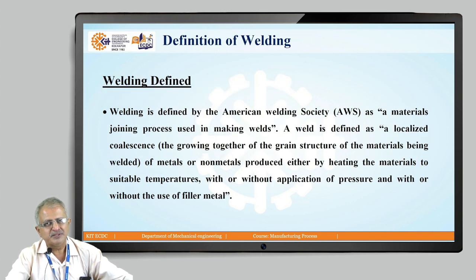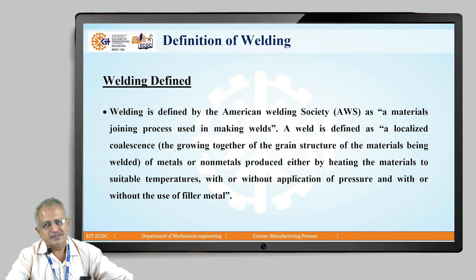Let us understand the definition of welding as given by the American Welding Society. It is a material joining process used in making a weld, where heat is deployed — specifically, it is a process where heat is applied in a localized coalescence, which is the growing of the grain structure of the materials being welded. Heat is the common source, the common parameter that is used. You can complete the weld process with application of pressure, or even without pressure by using filler material.